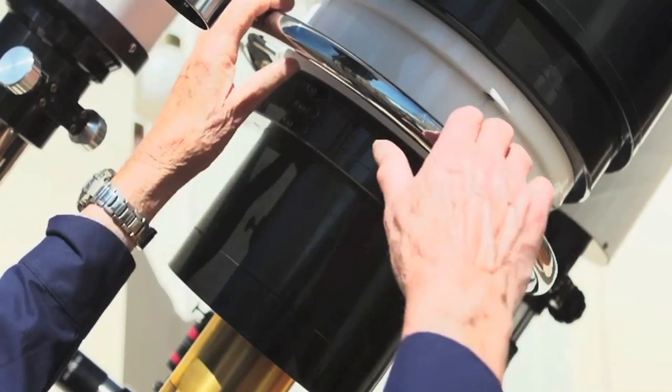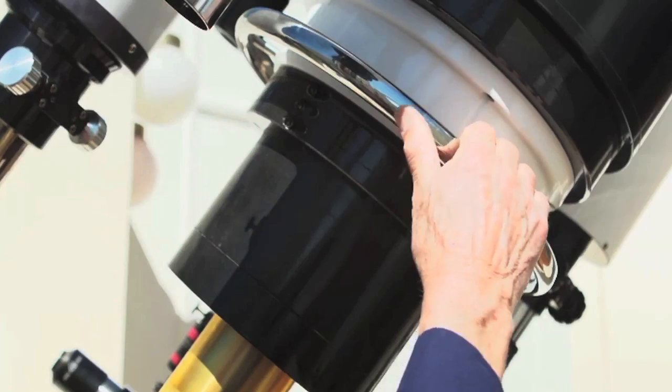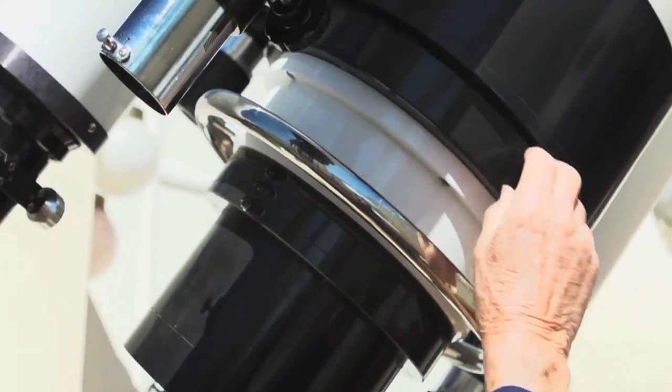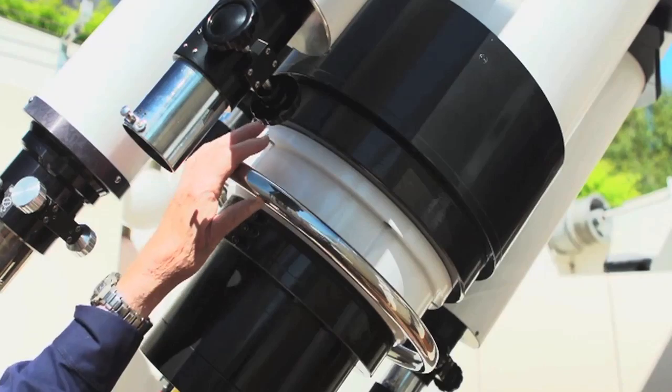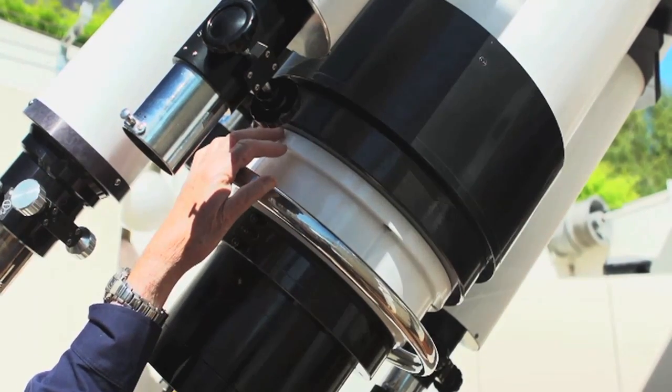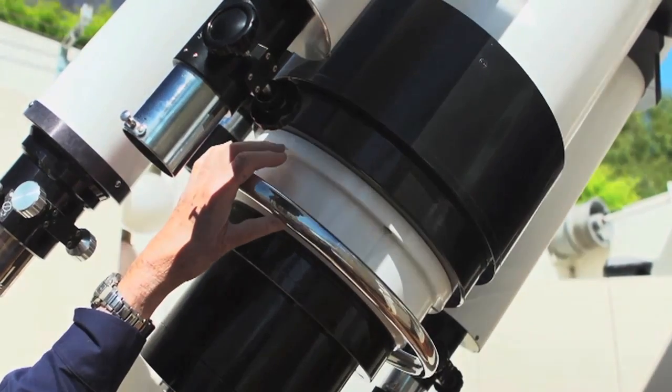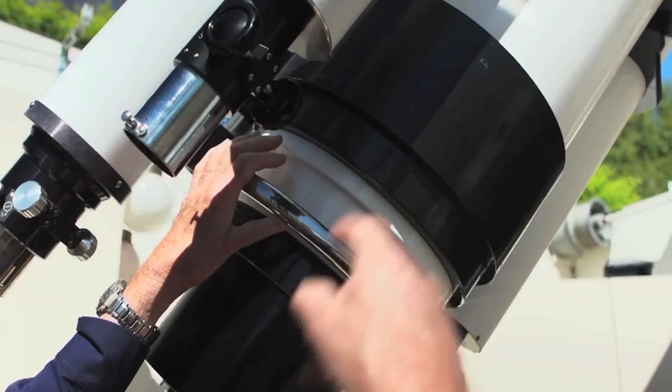This is another unique feature of this refractor. This big piece of steel is solid steel and we put that on there. It's very heavy. We put that on there to act as a counterweight and it helps to counterbalance the tube assembly.